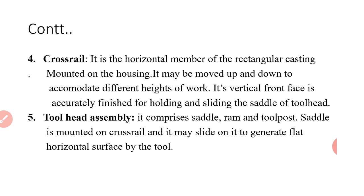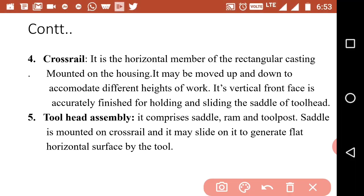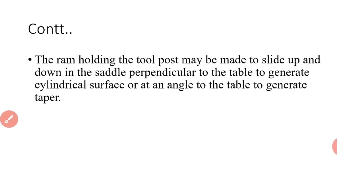The fifth part is tool head assembly. Tool head assembly consists of saddle, ram, and tool post. The saddle is mounted on the cross rail, and the saddle can be slid along the cross rail to generate horizontal surfaces.